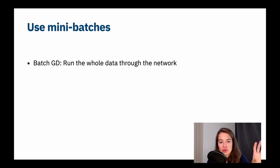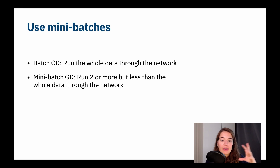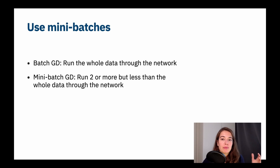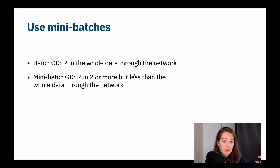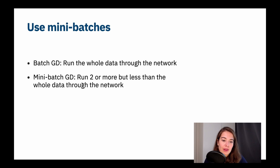First, you have batch gradient descent — that means you run the whole data through the network. Mini-batch gradient descent means you run two or more data points through the network, but not all. Anything that is two or more examples but less than the whole data set qualifies as mini-batch. Stochastic gradient descent is running only one example through the network.